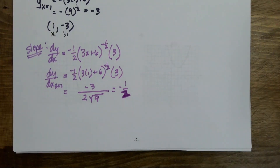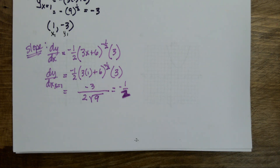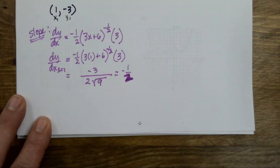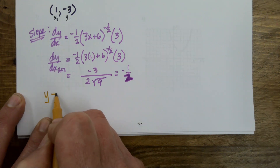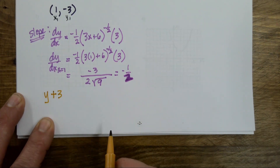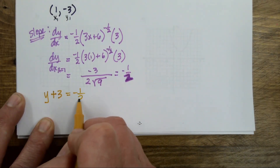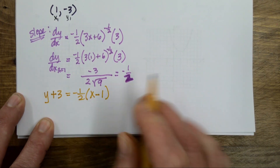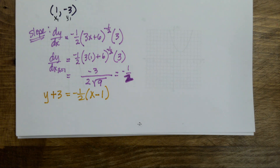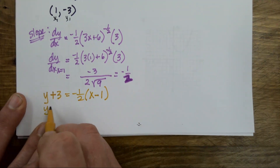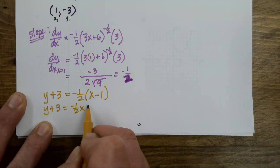Now I have to put this in slope-intercept form — that's what the directions ask for. I personally start by putting it in point-slope form and then move it around. This is y minus y1, that's the negative 3 I got from this point, equals the slope times x minus x1.